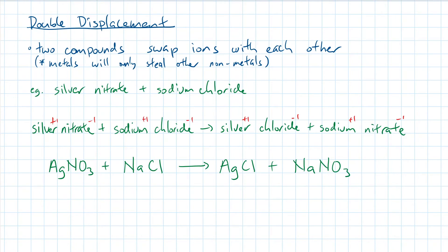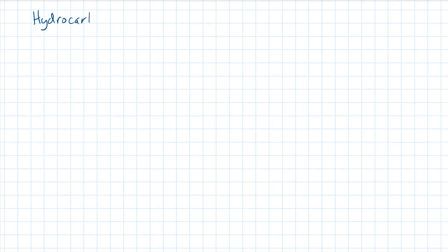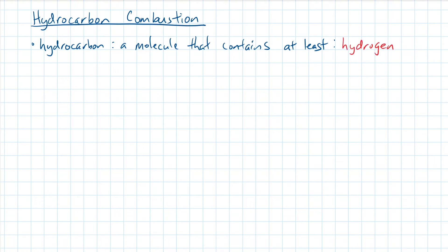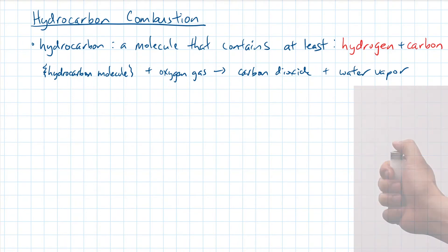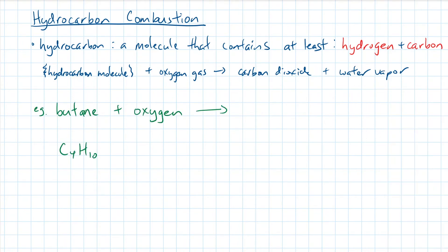The fifth type of reaction covered in grade 10 is a complete hydrocarbon combustion. A hydrocarbon is a molecule that contains two different elements. Can you guess which two elements they are? That's right, hydrogen and carbon. A complete hydrocarbon combustion always results in the formation of carbon dioxide and water vapor. When you ignite a lighter, the butane reacts with the oxygen in the air to form carbon dioxide and water vapor.